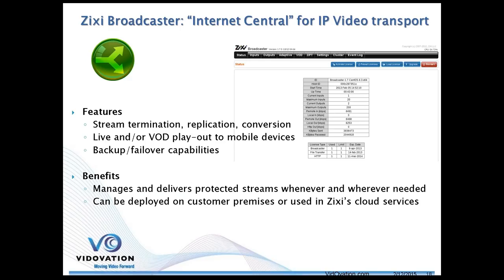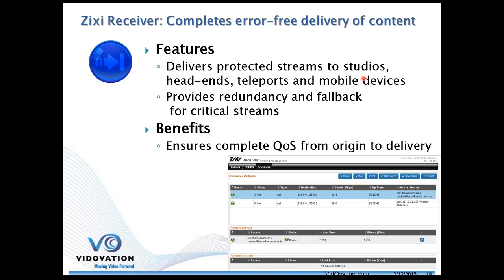The Zixi receiver delivers protected streams to master control, the head end, the teleport, or mobile devices. It can have redundant input — a Zixi receiver appliance can have multiple streams coming in and failover. If stream A fails, it switches to stream B. Or it can monitor quality of service: if one stream has more packet loss than another, beyond Zixi's capability to recover, it will switch to the secondary stream. All of this is built into the Zixi fabric and management.